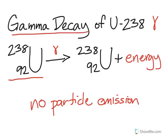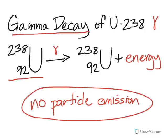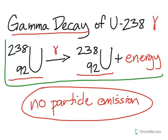So gamma decay, again, is no particle emission, it's just energy. So to do this kind of problem, you would just rewrite the isotope right here and then put plus energy. This would be the final answer or the equation that you would write out.